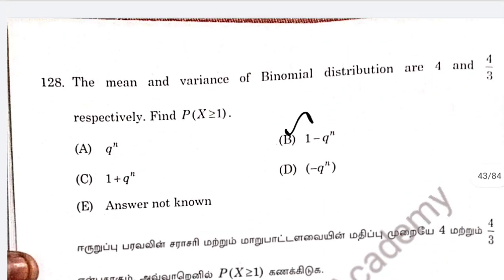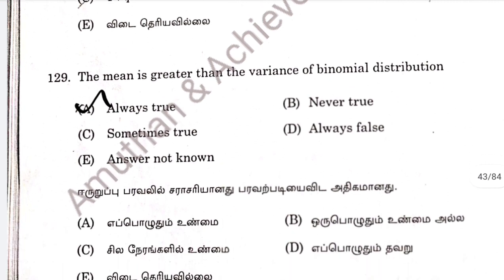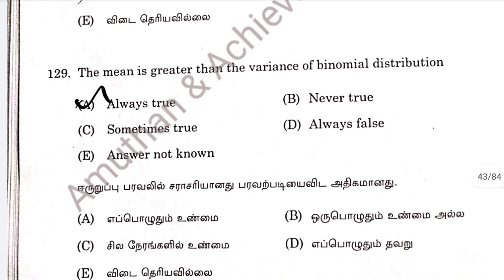Question 128: this is a binomial distribution problem. Option B: 1 minus q to the power n. Question 129: the mean is greater than the variance in a binomial distribution. This is always true.